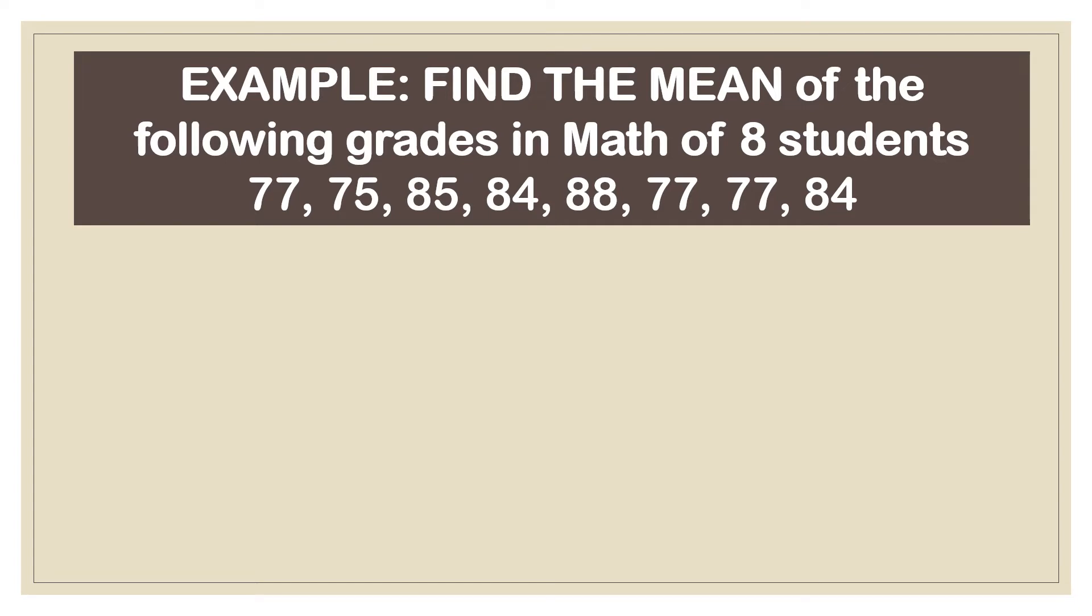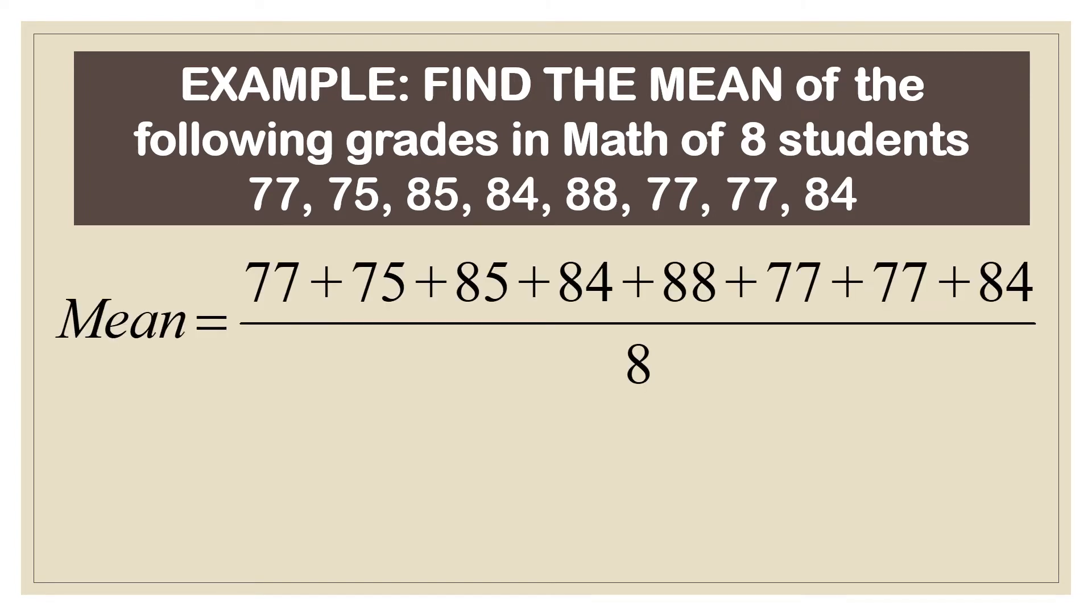Remember, we often do this with our grades especially when report cards are given out. We solve for the mean or the average. So the grades in math are 77, 75, 85, 84, 88, 77, 77, 84. So we solve the mean by adding all the numbers and dividing that by 8 because there are 8 students. So the average of the 8 students is equal to 80.88.